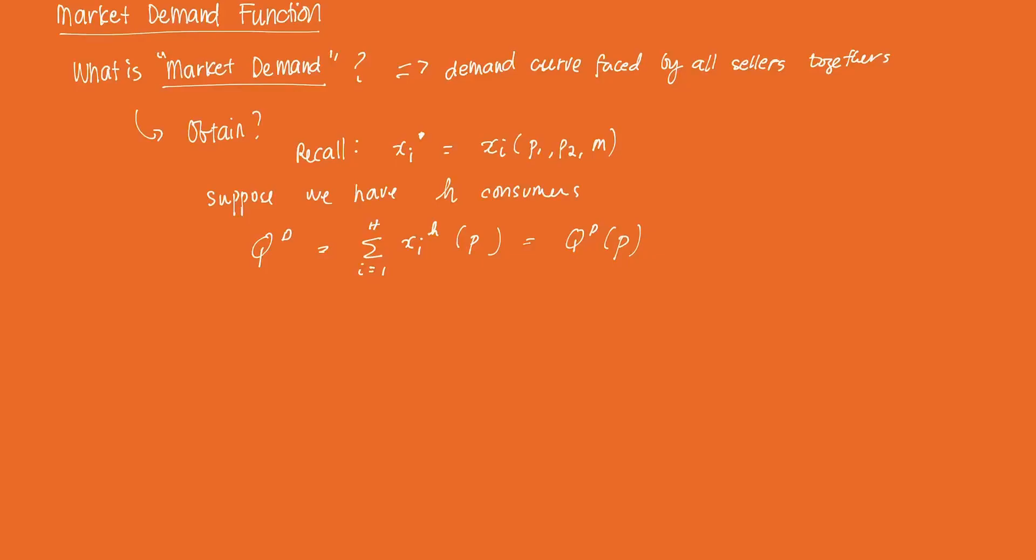Now again, it's some function of P because a consumer's demand reacts to changes in prices. And for now, we're going to hold that income remains constant for everyone. So income doesn't play a role.